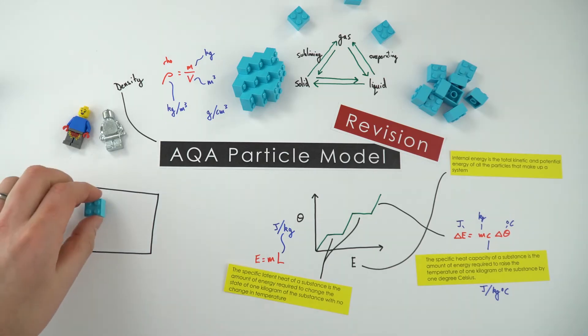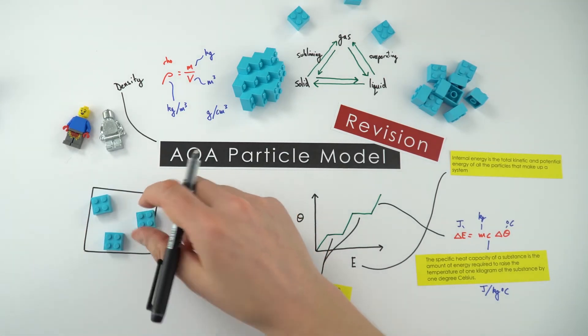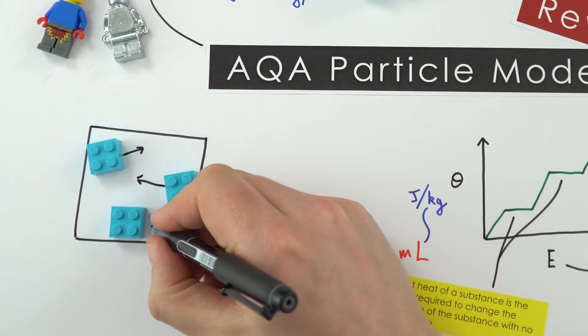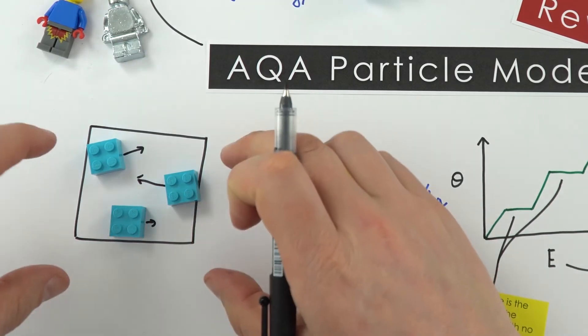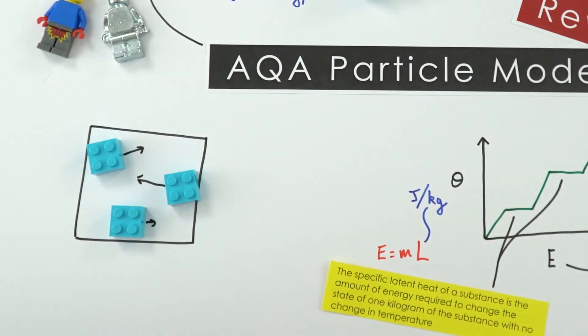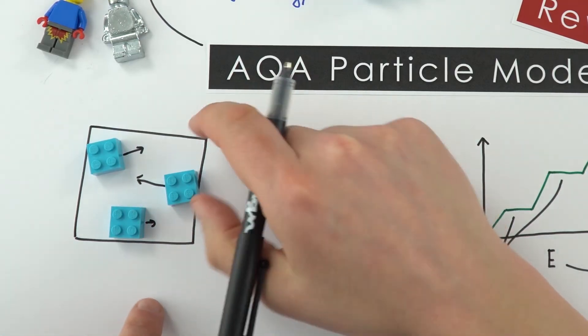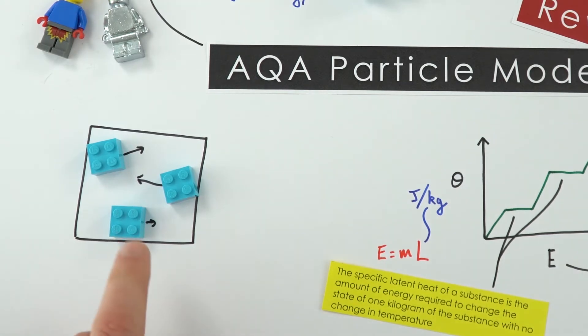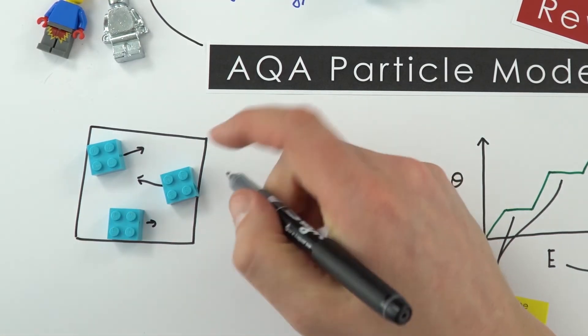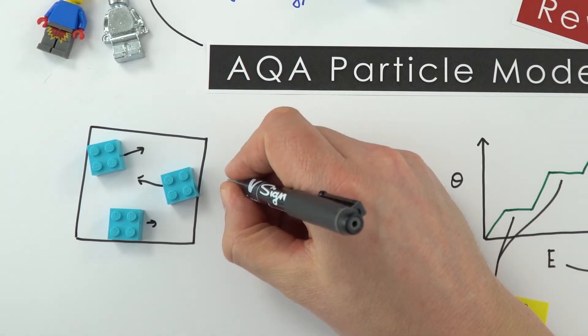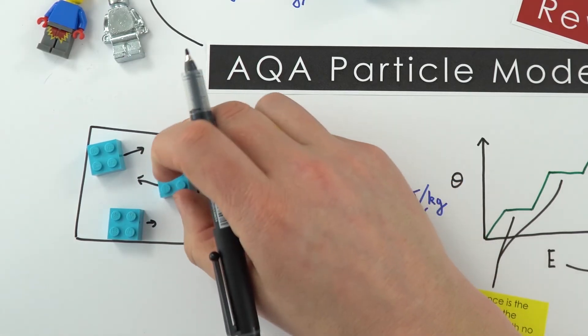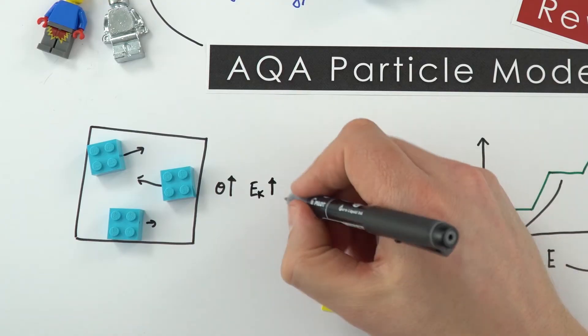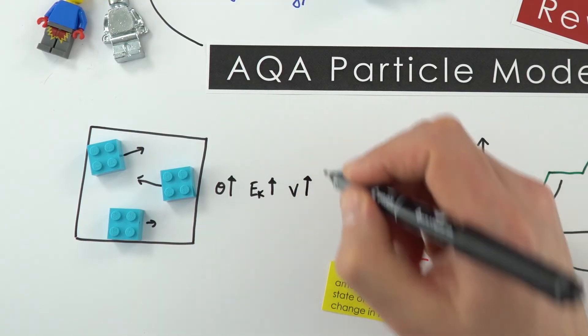Imagine this is a container that has some gas molecules in it. These are moving in all directions at a range of different speeds—that's the kind of random motion we get in a gas. Provided we kept this as a constant volume and then increased the temperature, as you increase the temperature, we're going to give these things more kinetic energy, remembering that internal energy is related to the kinetic and potential energies of these particles. If you increase the temperature, these things would have an increased store of kinetic energy, and that means they'd be moving quicker. Their velocity, or speed, also increases.